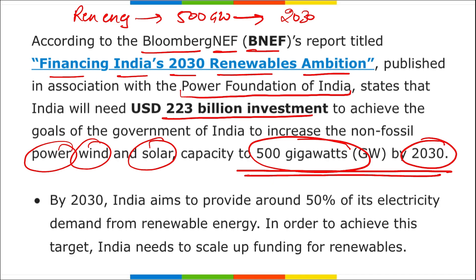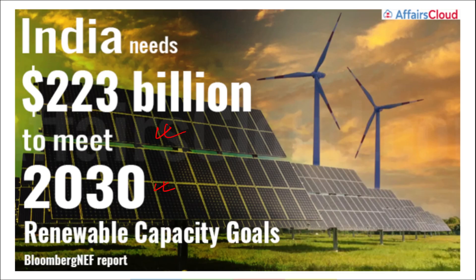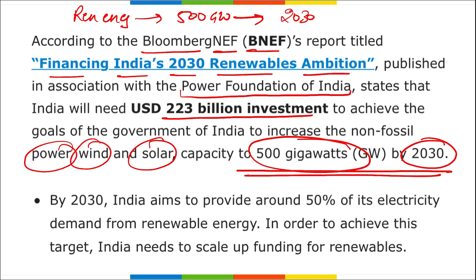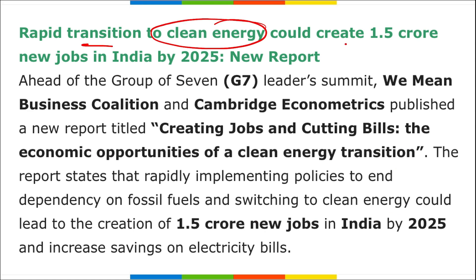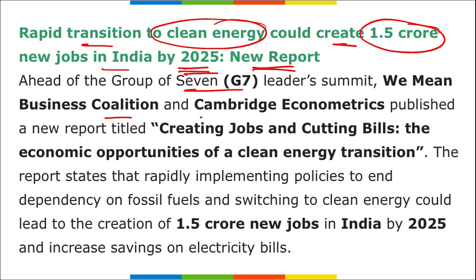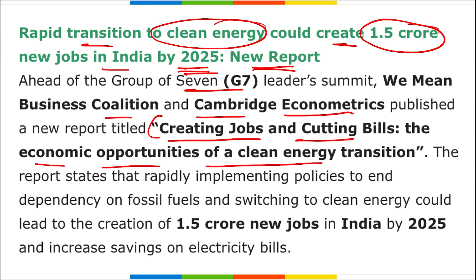According to this report, India will require $223 billion investment to meet the 2030 target of generating 500 gigawatts of renewable energy. A separate report released ahead of the G7 Leaders Summit by We Mean Business Coalition and Cambridge Econometrics, titled 'Creating Jobs and Cutting Bills: The Economic Opportunities of Clean Energy Transition,' states that rapidly implementing policies to end dependency on fossil fuels could create around 1.5 crore jobs in India by 2025.